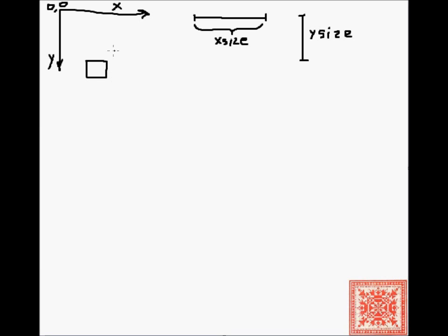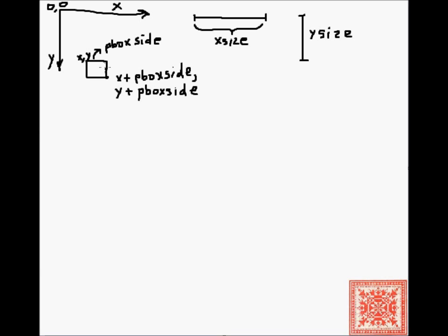We will be drawing points, and to draw points we'll be using a draw function that allows us to draw ellipses in rectangle boxes. We'll actually be drawing ellipses in square boxes. The top left is x, y, and at the bottom right the coordinate is x plus p-box-size and y plus p-box-size. This is essentially a bounding box in PIL specified by four coordinates, and inside that bounding box we'll draw a circle, because it is a square.